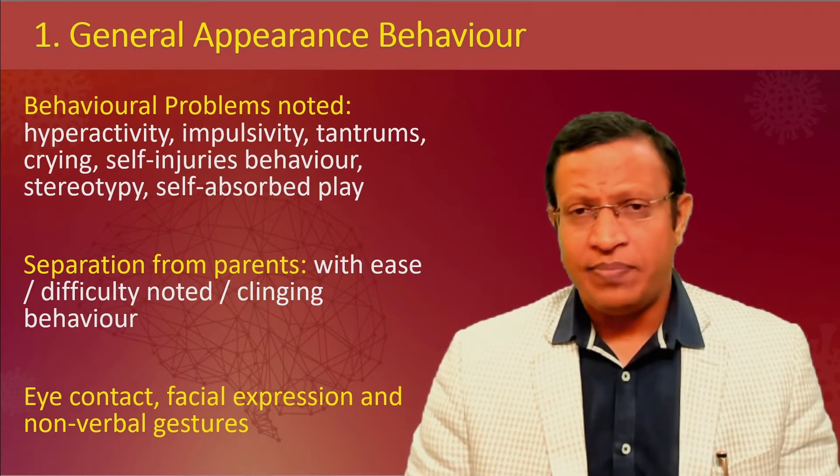Coming to mood — comment on subjective and objective mood, congruence, appropriateness, range, reactivity, and lability. A useful tip: use emoticon cards or dolls to help the child label emotions. Ask how the child has been feeling and how it has felt over the past one week. Children today are often able to name emoticons, which can assist in mood assessment.